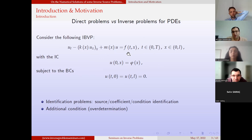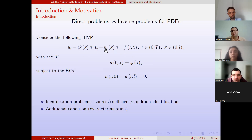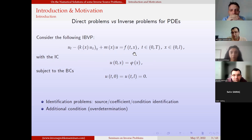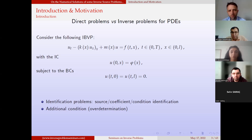For example, if the right-hand side function f is unknown in addition to u, then this problem is called a source identification problem. Or if k or m is unknown, it is called a coefficient inverse problem or coefficient identification problem. Similarly, if phi is unknown, it is called a condition identification problem. In order to identify the unknown parameter, we need one additional condition called overdetermination, which might be given as a local condition or a non-local condition such as an integral condition.